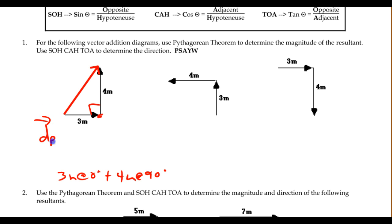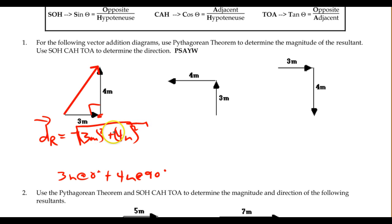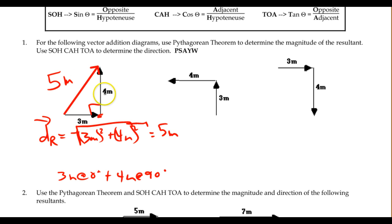The resultant displacement would be the square root of 3 meters squared plus 4 meters squared. 3 squared is 9, plus 4 squared is 16, so the square root of 25 equals 5 meters. You may have recognized that was going to be 5 meters, because this is a classic 3-4-5 triangle.